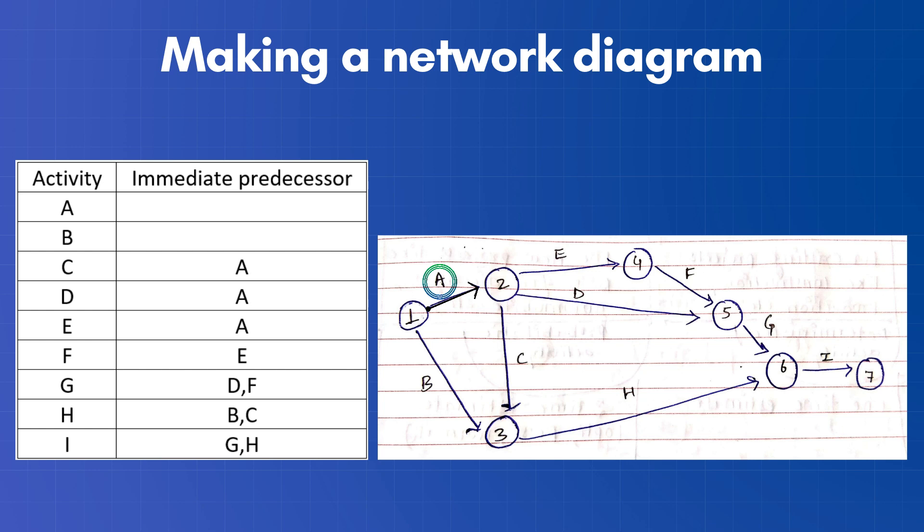Event 1 to 2 signifies the time frame of activity A. Now from event number 2, let's branch out or create a burst event involving activity C, D and E.